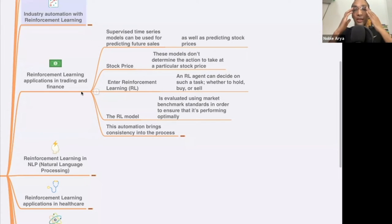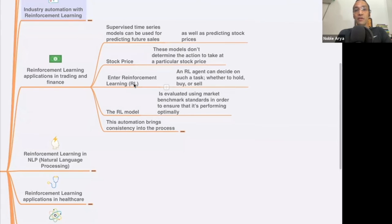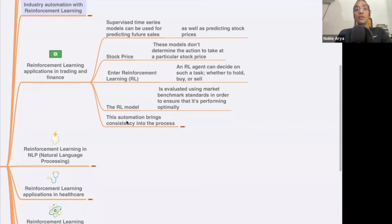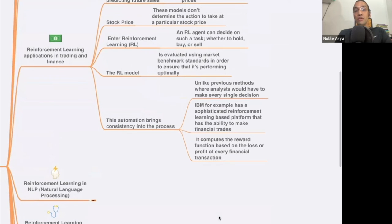There's uncertainty in trading and finance and it can be applied there. Supervised time series modeling can be used for predicting future sales as well as predicting stock prices. These models don't determine the action to take at a particular stock price. Enter reinforcement learning. An RL agent can decide such tasks, whether to hold, buy or sell. The RL model is evaluated using market benchmark standards in order to ensure it's performing optimally. This automation brings consistency into the processes.